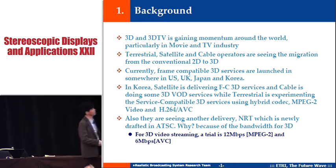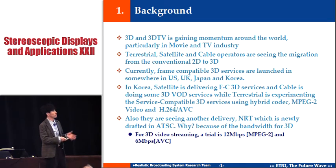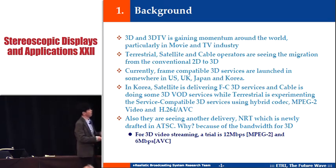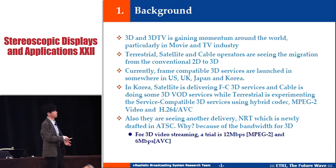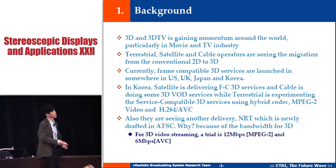They are also considering another delivery method: NLT, which is newly drafted in ATSC. Because of bandwidth constraints for 3D — particularly in ATSC where bandwidth is 19 Mbps — delivering 3D video requires a combination like MPEG-2 video at 12 Mbps plus AVC at 6 Mbps. So NLT might be an alternative solution.